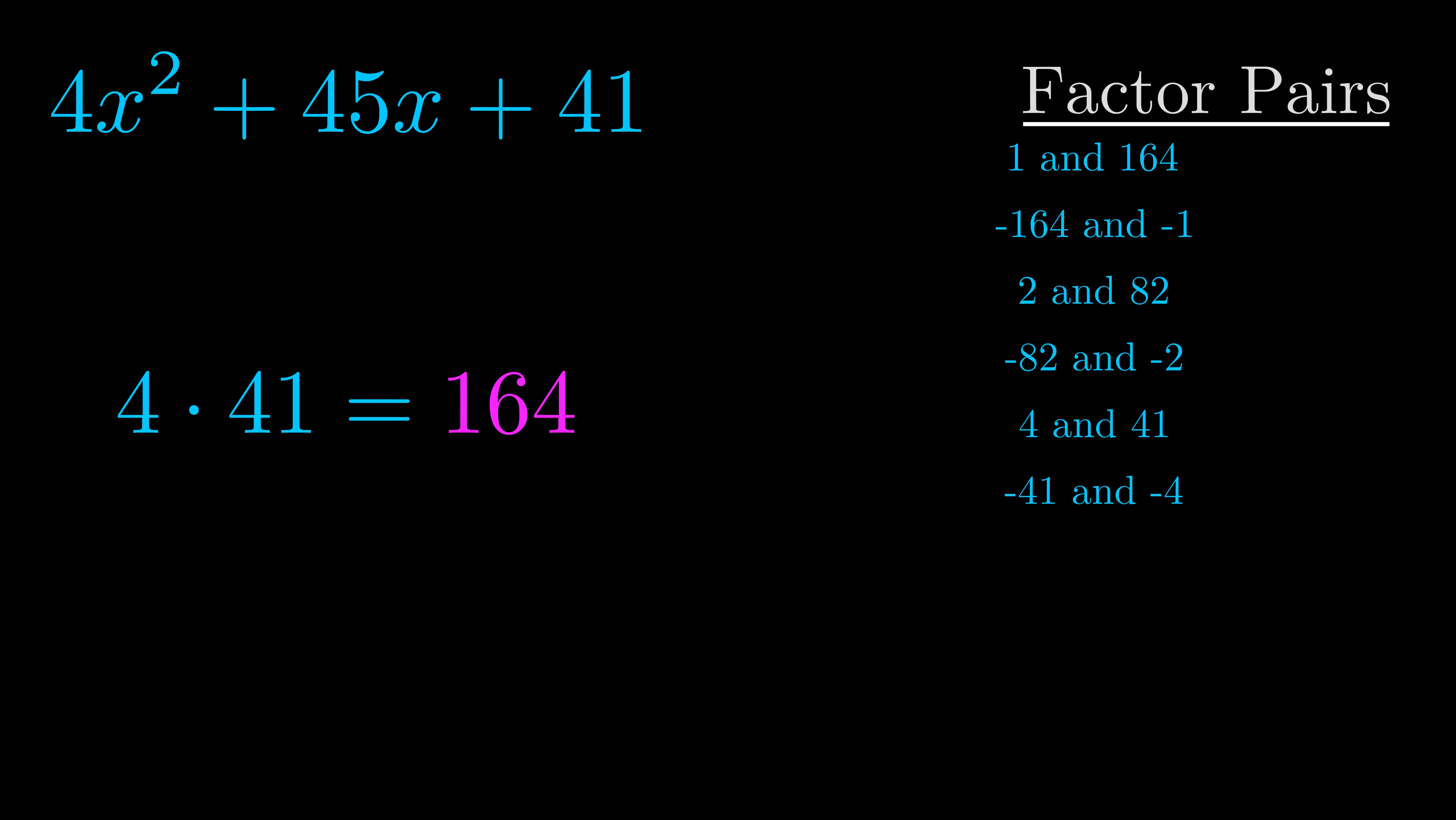Now once you have these factor pairs the goal is to find which of these pairs adds to the b value. The b value is the coefficient on the x term. That's the middle term, the one that we haven't done anything with yet. And really this is the only factor pair that we need.